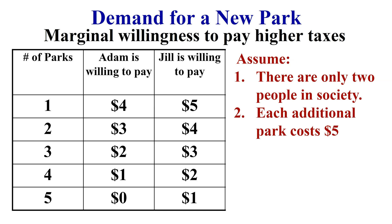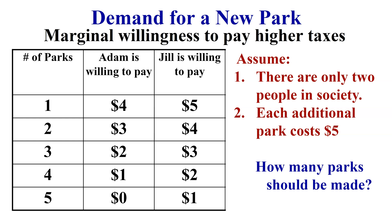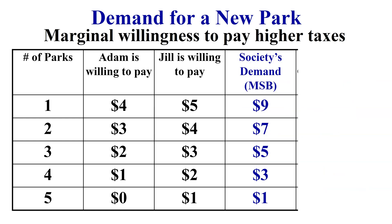Our assumptions here: there are only two people in this town — Jill and Adam — and their willingness to pay becomes the market's willingness to pay. All the parks we want to build cost $5 each (ceteris paribus). The question is how to build enough parks to satisfy society's demand without over-allocating resources by producing too many, or under-estimating how many society wants. We use MSB equals MSC: the marginal social benefit is the sum of Adam's and Jill's willingness to pay, giving us the downward sloping demand curve.